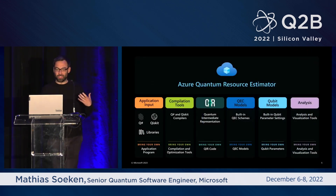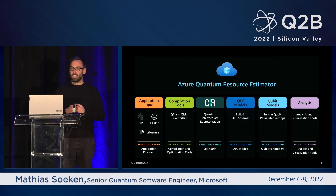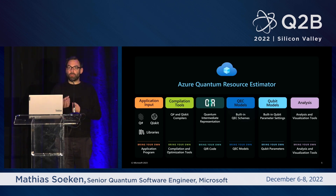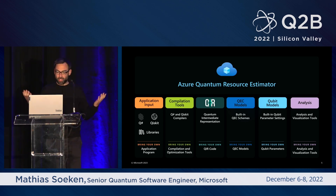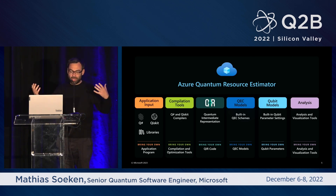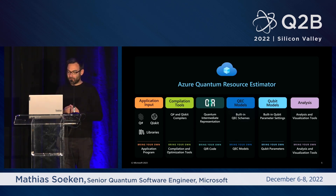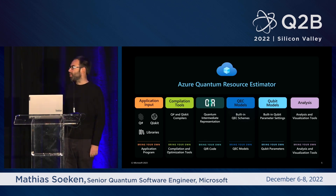To estimate the resources of a quantum computer, we provide the Azure Quantum Resource Estimator — a tool where you can bring your applications, algorithms, and quantum programs to analyze the cost on a future fault-tolerant quantum computer by providing models of how that quantum computer would operate. The input can be quantum programs written in quantum programming languages like Q# or Qiskit. It's built on top of QIR, a quantum intermediate representation, so you can bring your own platform or compilation tools to access this estimator. We want to make it easy for everyone to plug in, so if you have existing tool flows, it just works by providing QIR.